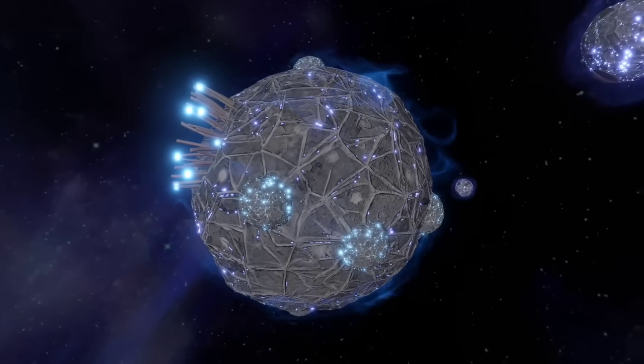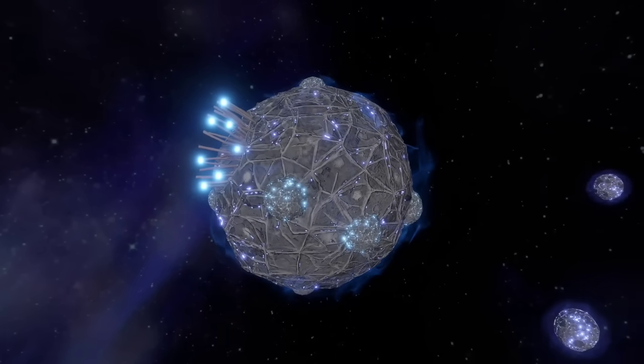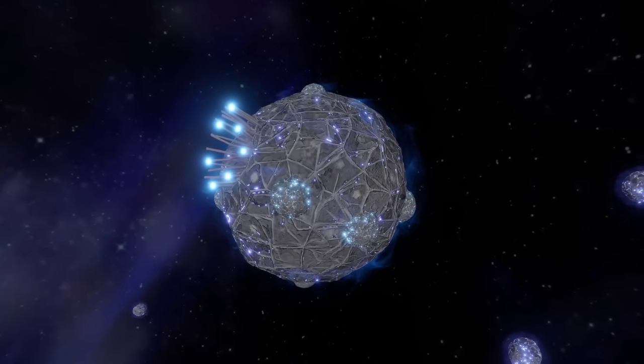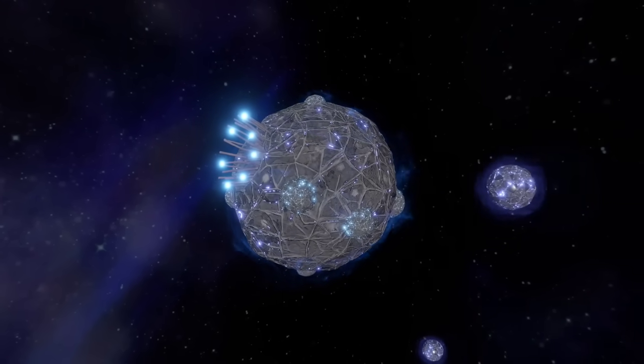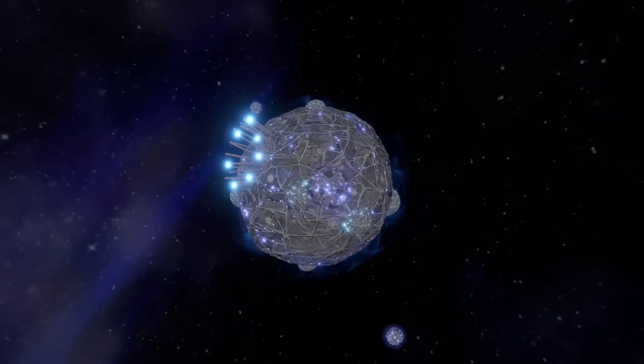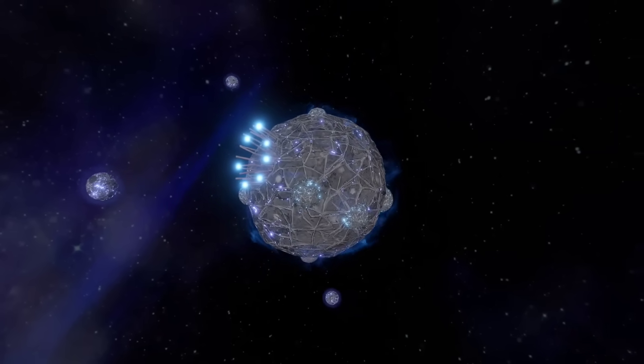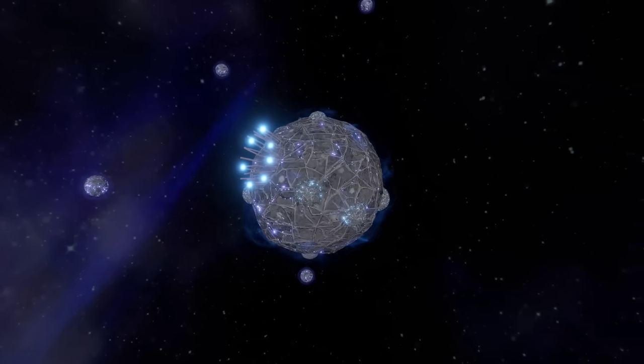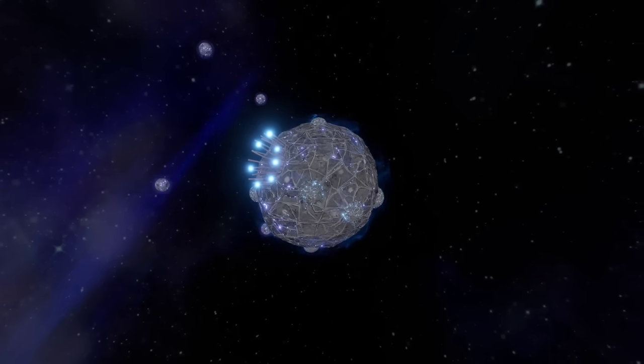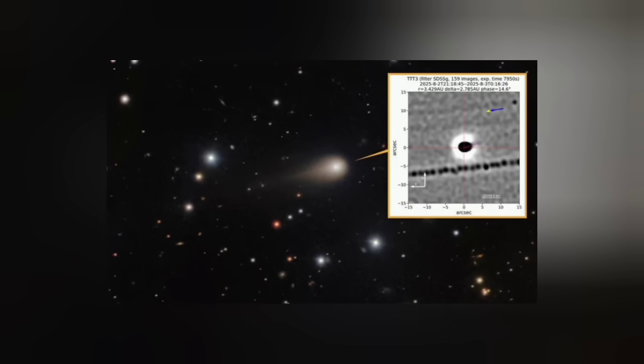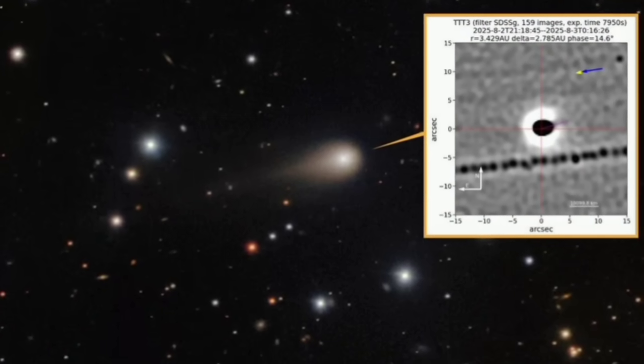At the current separation of 3i Atlas from the sun of 270 million kilometers, the displacement would imply that the objects are closer to the sun than 3i Atlas by about 54,000 kilometers, corresponding to an angular separation of 0.7 arc minutes on the sky. This separation is comparable to the sunward elongation of the teardrop glow around 3i Atlas.